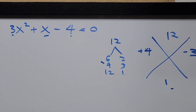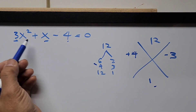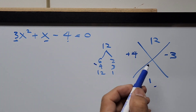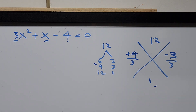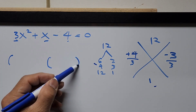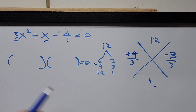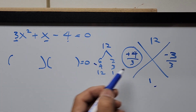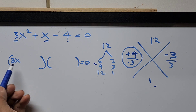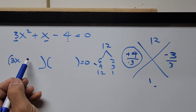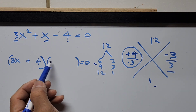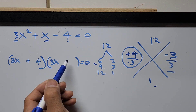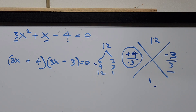Since the bigger number gets the positive sign, we have positive 4 and negative 3. The leading coefficient is 3, so we divide these factors by 3. We can now build our parentheses: the left factor is 3x plus 4, and the right factor is 3x minus 3. We equate both factors to 0 to find the values of x.